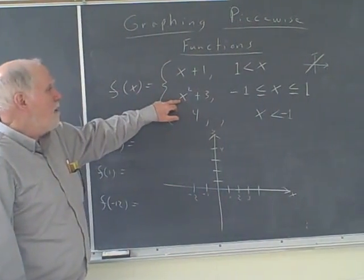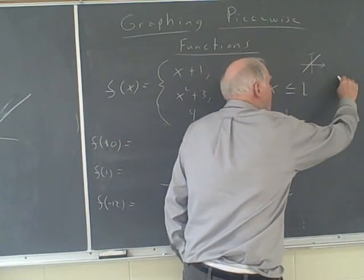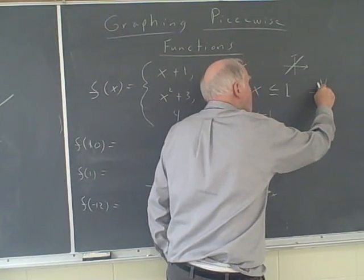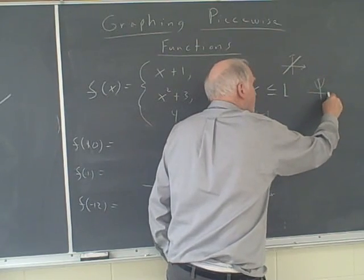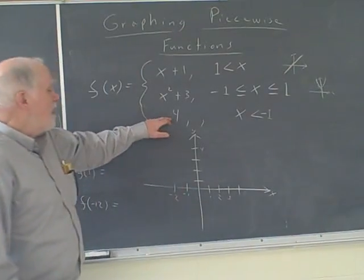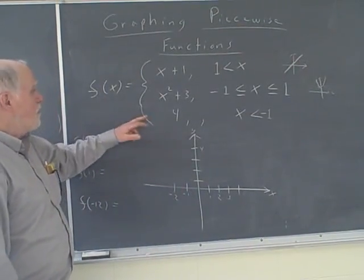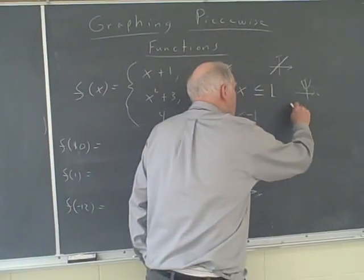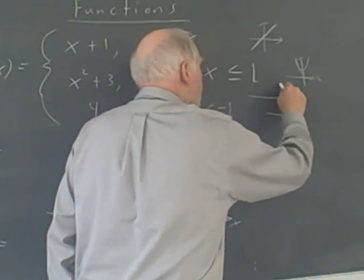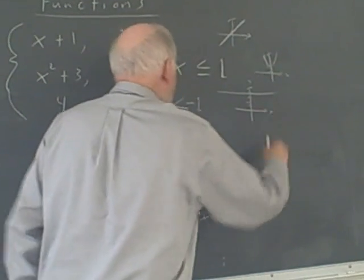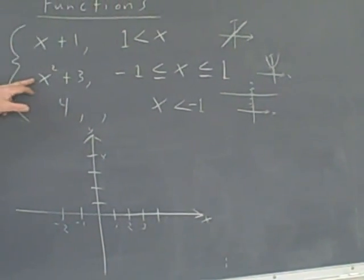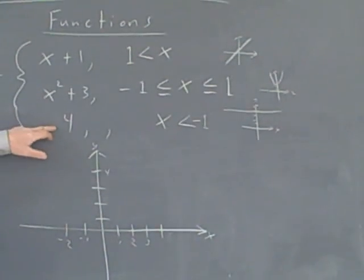And here we've got a parabola that's moved up three units, so it looks like this — vertex at 3. And then this one is just a horizontal line, y equals 4. So we're talking about y equals x plus 1, y equals x squared plus 3, and y equals 4.